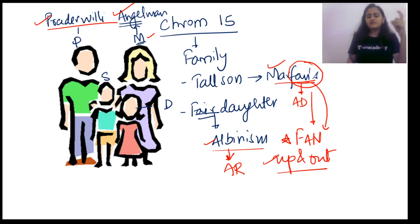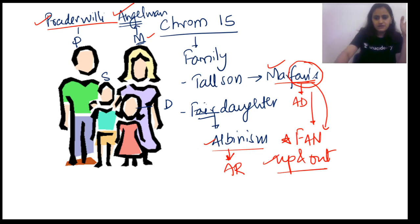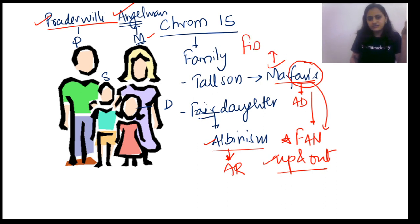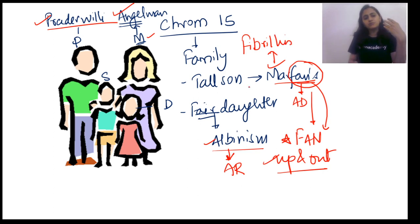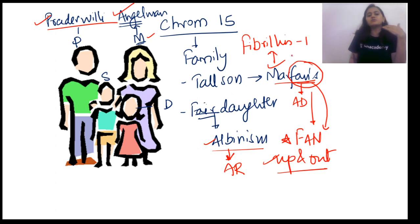Remember, Marfan's subluxation is up and out, and it is autosomal dominant. The protein involved is fibrillin. They can ask: defect in fibrillin leads to Marfan syndrome. On chromosome 15, it is fibrillin-1, not fibrillin-2.